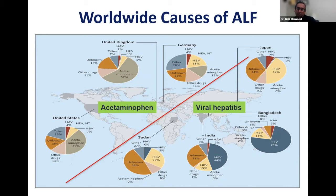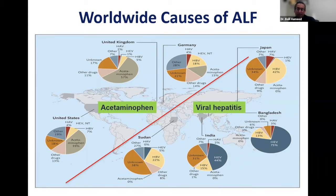Depending on which part of the world you are in, it's important to understand the common etiology. In the Western world, acetaminophen is the most common cause, followed by drug-induced liver injury and unknown causes, with viral hepatitis — mostly hepatitis B, E, and A — making up the rest, along with other causes requiring additional testing.